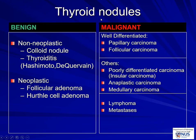In terms of the approach to the thyroid nodule, it's always good to have a spectrum in mind of the possible differential diagnosis. I've done a practical division into benign versus malignant. In the benign category, we would have the commonest cause of a thyroid nodule, which is part of a nodular goiter — a colloid nodule or benign follicular nodule. Sometimes we can have an even enlargement of the thyroid in cases of Hashimoto or De Quervain thyroiditis. Neoplasms can also give rise to benign nodules, such as follicular adenoma or Hürthle cell adenoma.